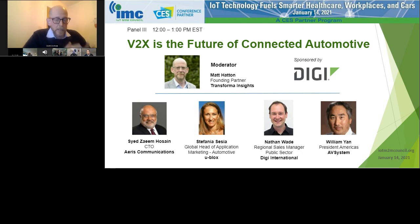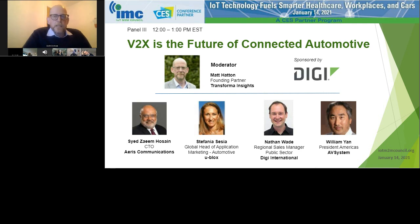Today's session is going to be looking at V2X and the future of the connected car. Connected cars is nothing new — GM's OnStar is 25 years old this year, and companies have been using fleet management solutions for decades. But the pace of change has accelerated. Not only is it now standard practice for vehicles to roll off production lines with connectivity baked in, we're also seeing V2X starting to arrive, and alongside that, the rise of autonomous vehicles.